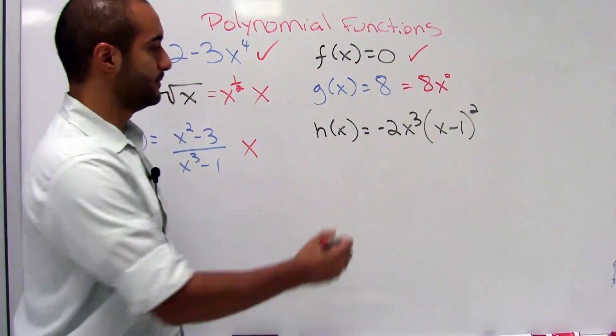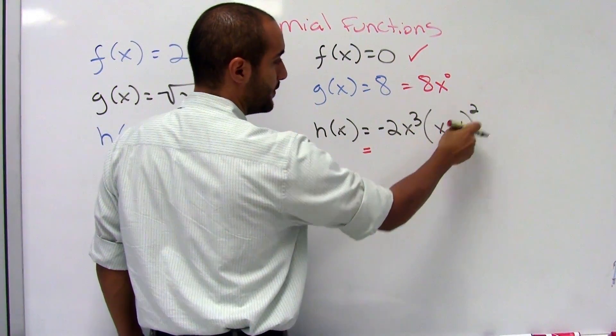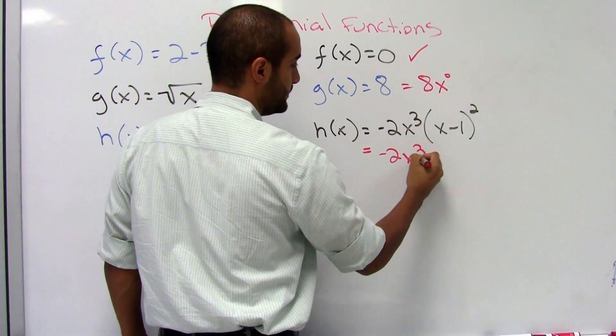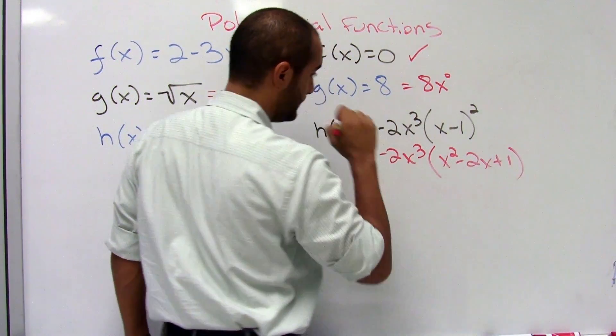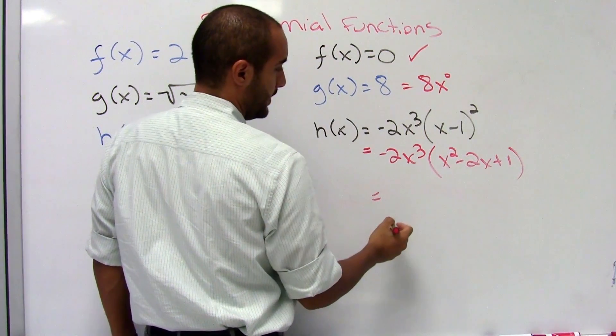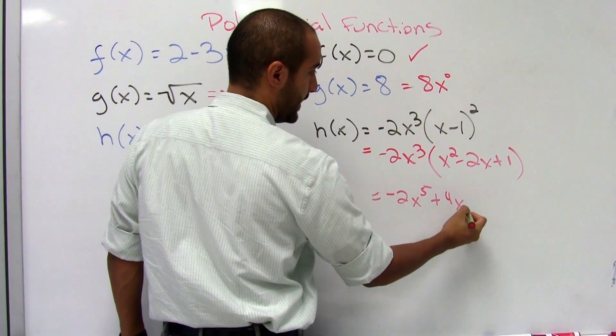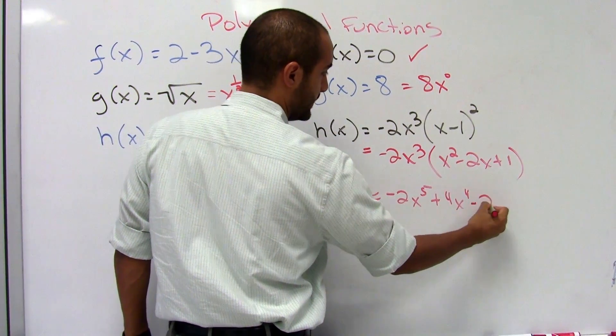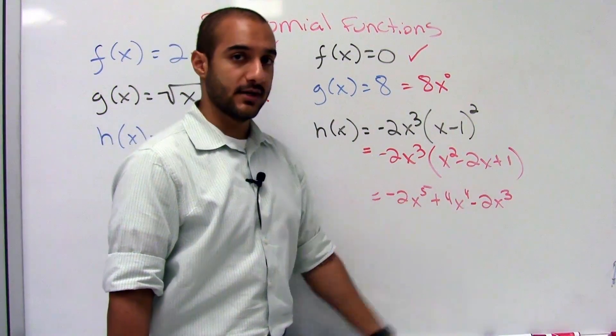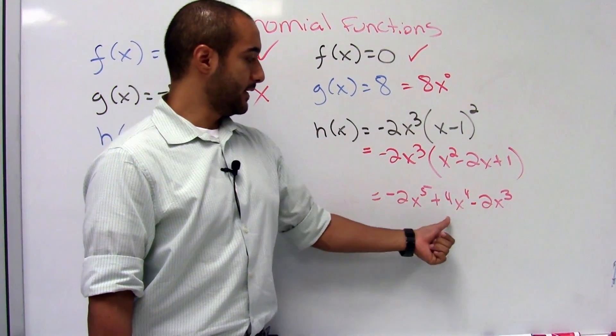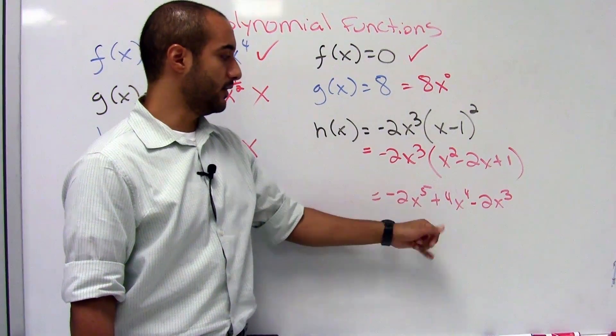Here we need to do some simplifying. So let me see what I get here. I have this to a power, so I'm going to take care of this first. Here I end up getting x squared minus 2x plus 1. Distributing this, I get negative 2x to the fifth plus 4x to the fourth minus 2x to the third. And here, this seems to satisfy everything we said earlier for the definition. And the highest degree here is 5. So this is a polynomial of degree 5.